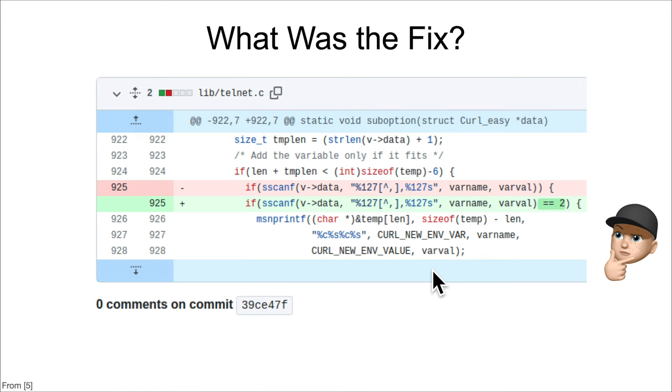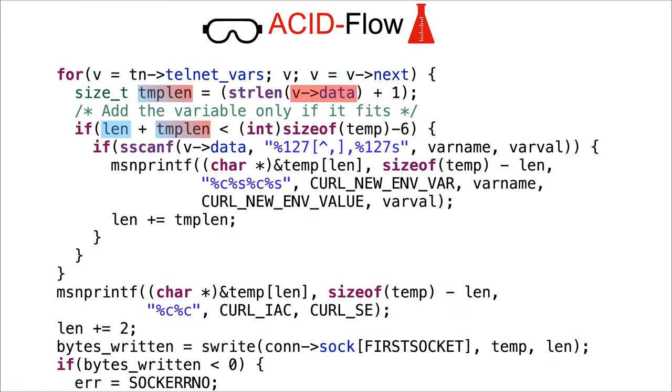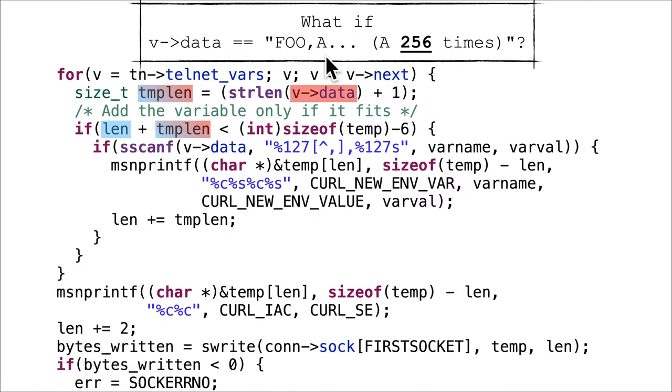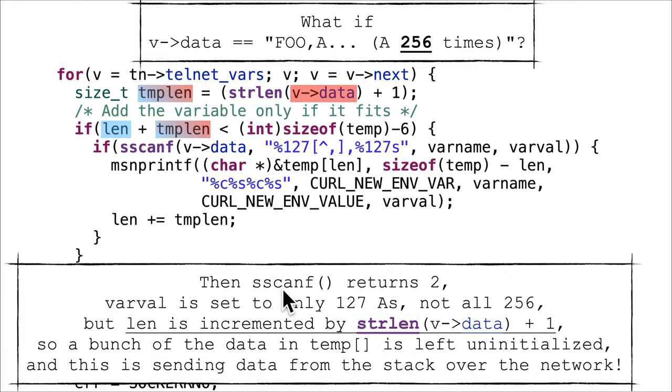So what if, for instance, the attacker set the first part to some small string and left the second part to a big string? Well, in that case it would actually return two from sscanf because the first one would match - foo would go into varname and then 127 out of the 256 A's would go into varval. So sscanf returns two, varval is 127 A's, not all 256.